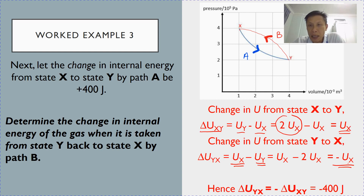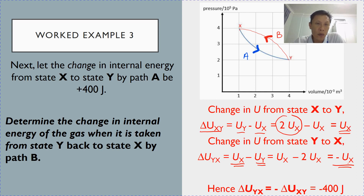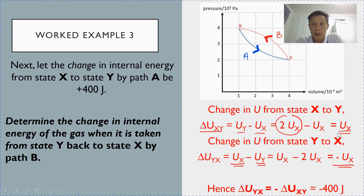In other words, there is a decrease in internal energy as the gas goes from state y to state x. This also shows that change in internal energy is path independent — it only depends on the two states. That is all for example three.